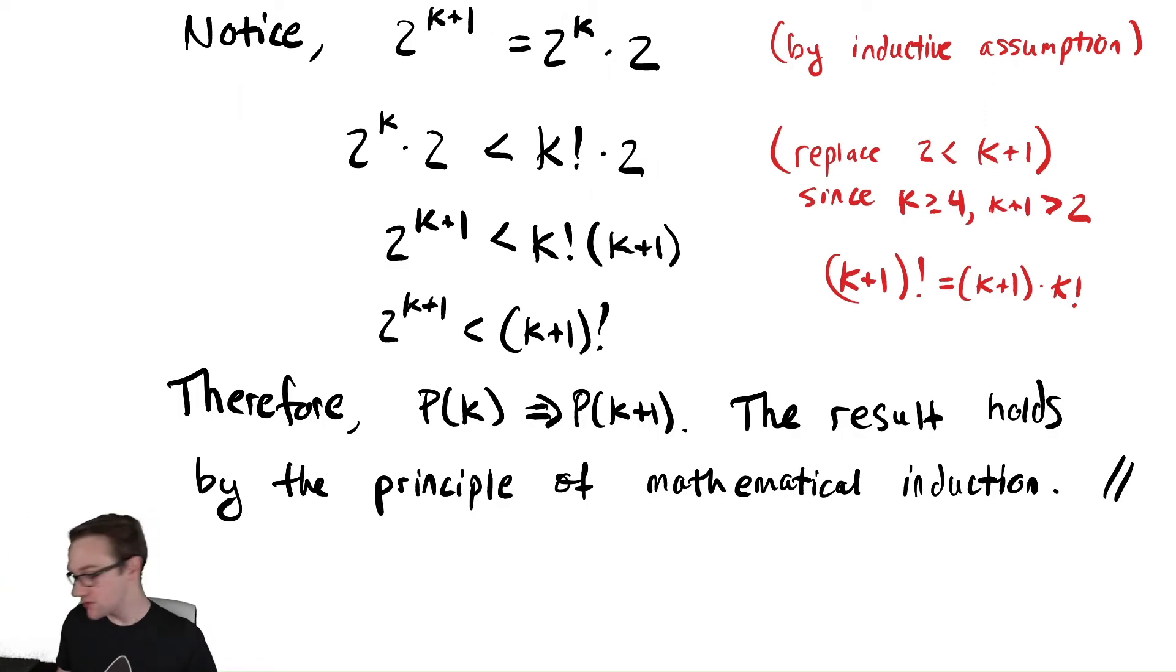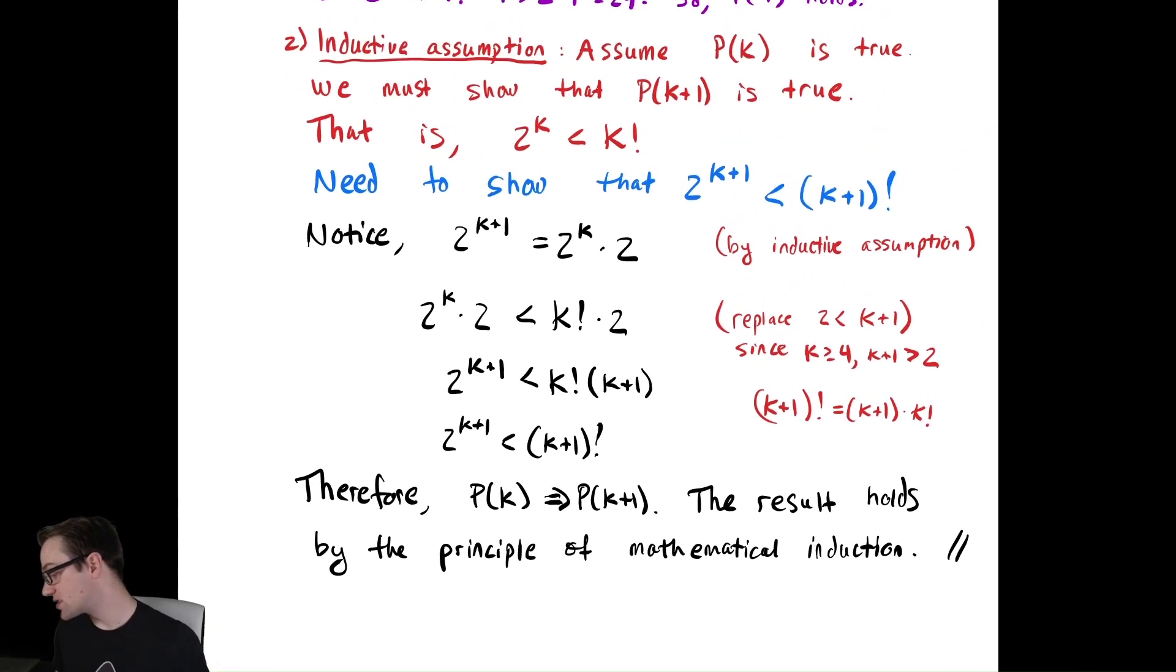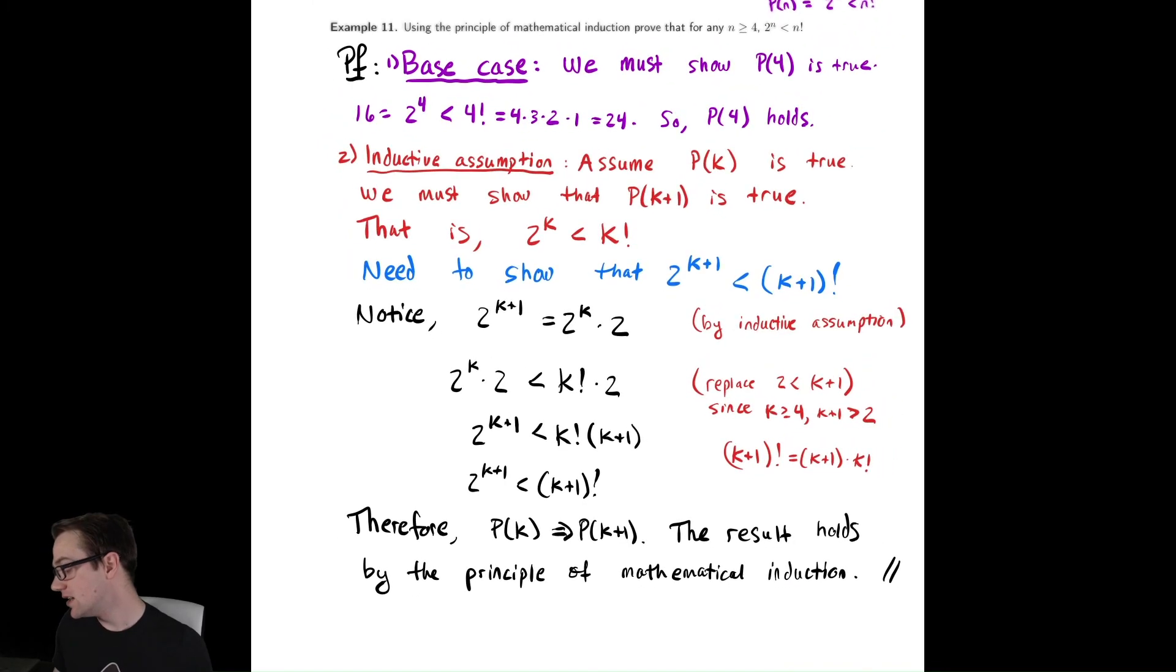Like I said, there was two parts to this proof. The first part is the base case, usually easy. And the second part was to, usually we state our inductive assumption to make sure that we understand what it is and what we're trying to prove, which I did there in red and blue to make sure that they stick out. And then we try to show that the inductive assumption for P(k) implies P(k+1). So we start with some part of P(k+1) and then munge it around with a bunch of algebra.